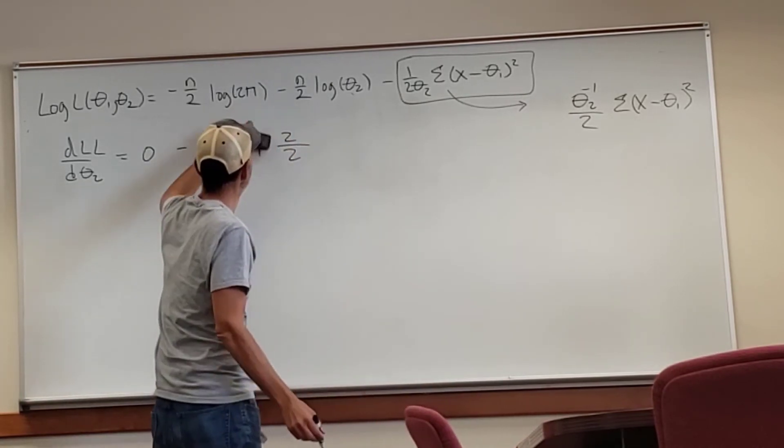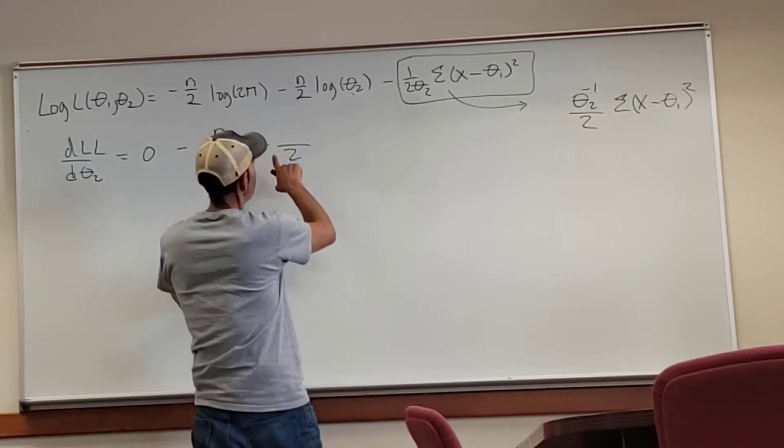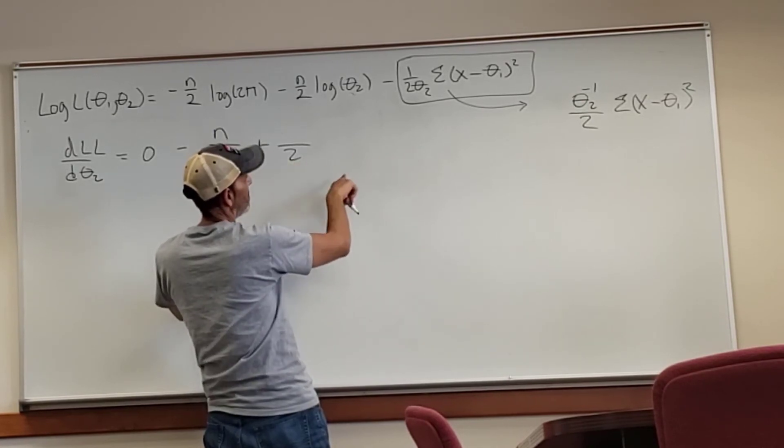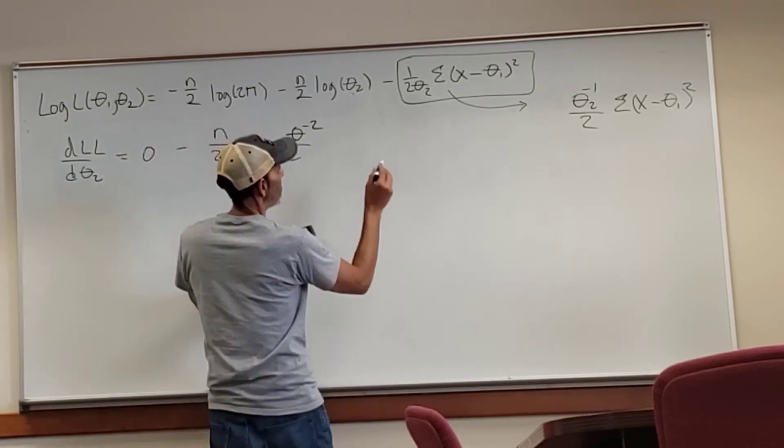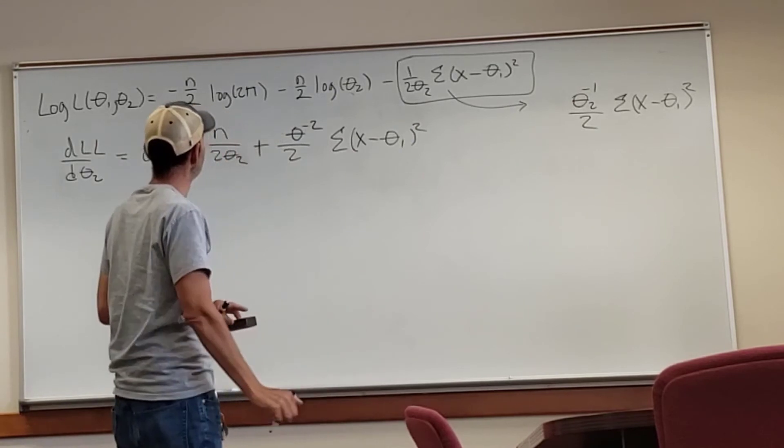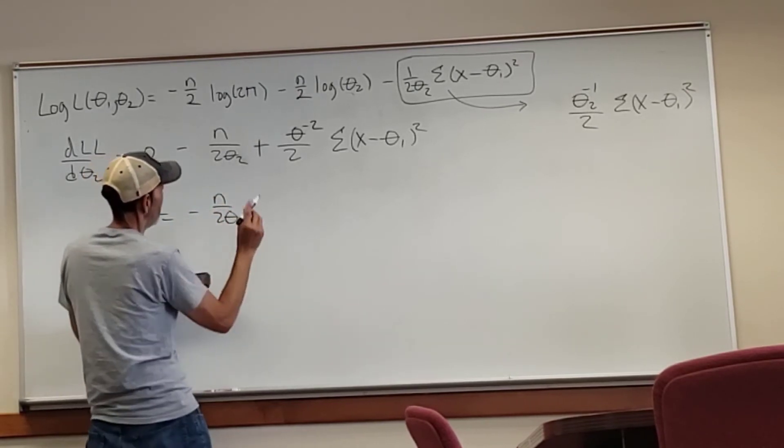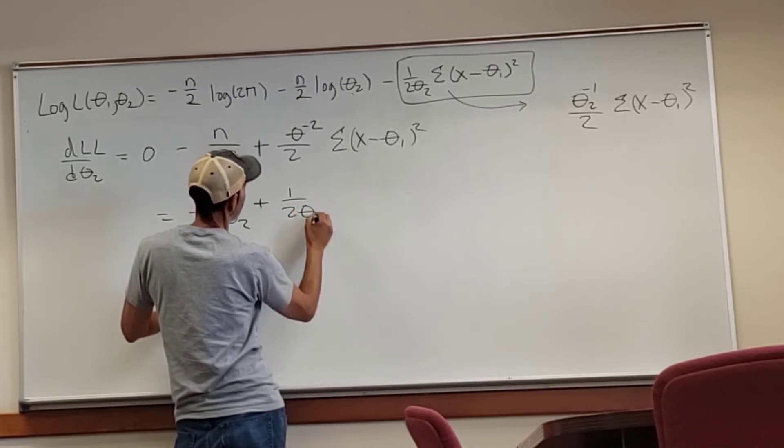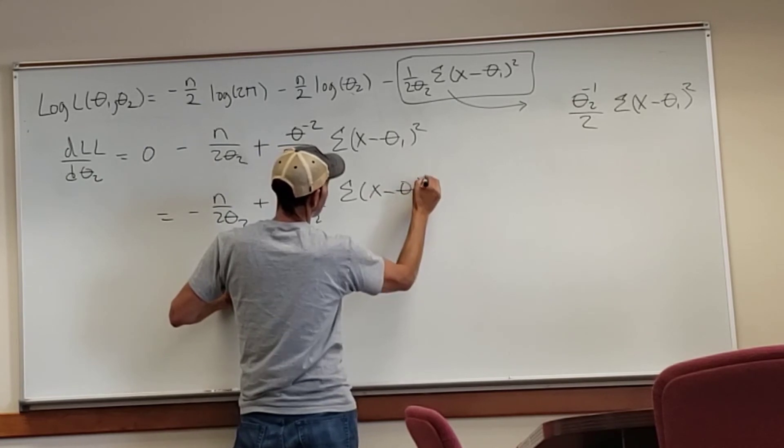There you go. This negative one moves forward, makes it a positive. Never rush when you do math. Think. Theta to the negative two means that's going to drop to the denominator. I'm going to drop to the denominator and be a theta squared in the denominator. Two theta squared.